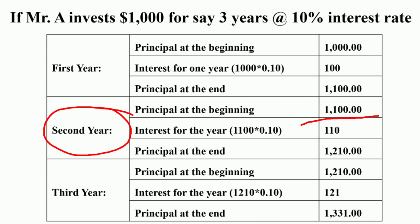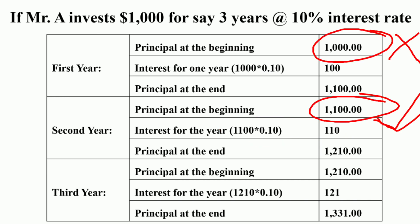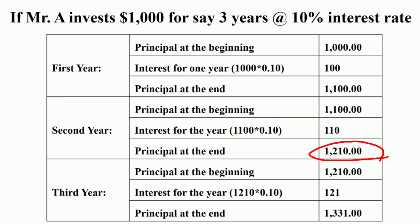In the second year, the principal amount at the beginning will be ₹1100 and the interest rate is also 10%. Now the interest is calculated not on the initial principal amount but on the principal at the start of the second year, that is ₹1100. So 10% of ₹1100 is ₹110, and the principal amount at the end of the second year will be ₹1210.